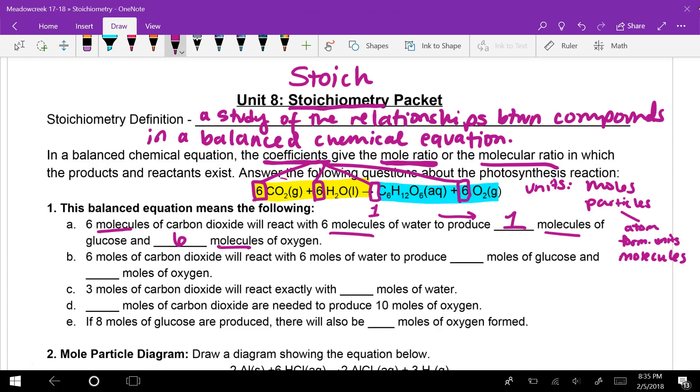Okay, but for B, it reads off a little bit different. It says six moles of carbon dioxide will react with six moles of water to produce one mole of glucose and six moles of oxygen. So it's exactly the same. You're reading the same coefficients. It is just changing your unit from molecules to moles.